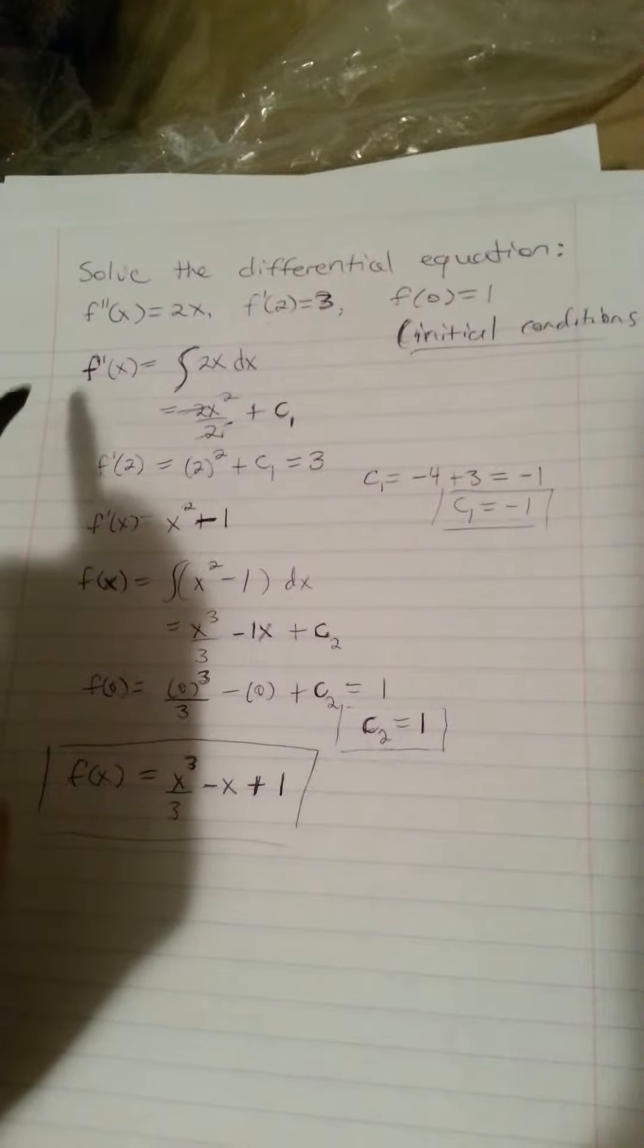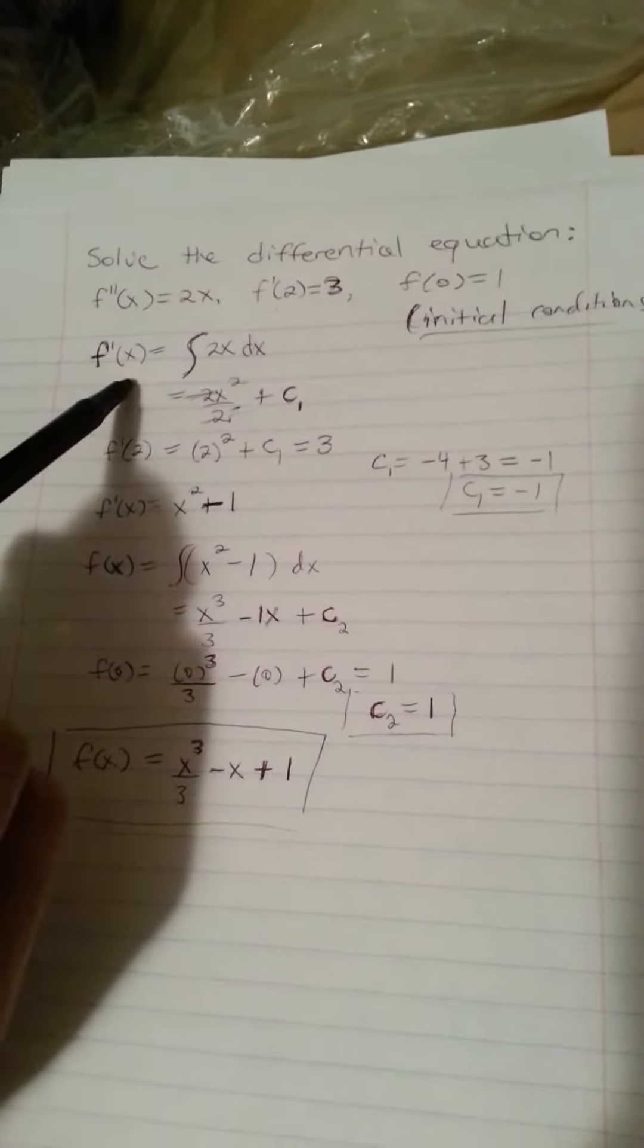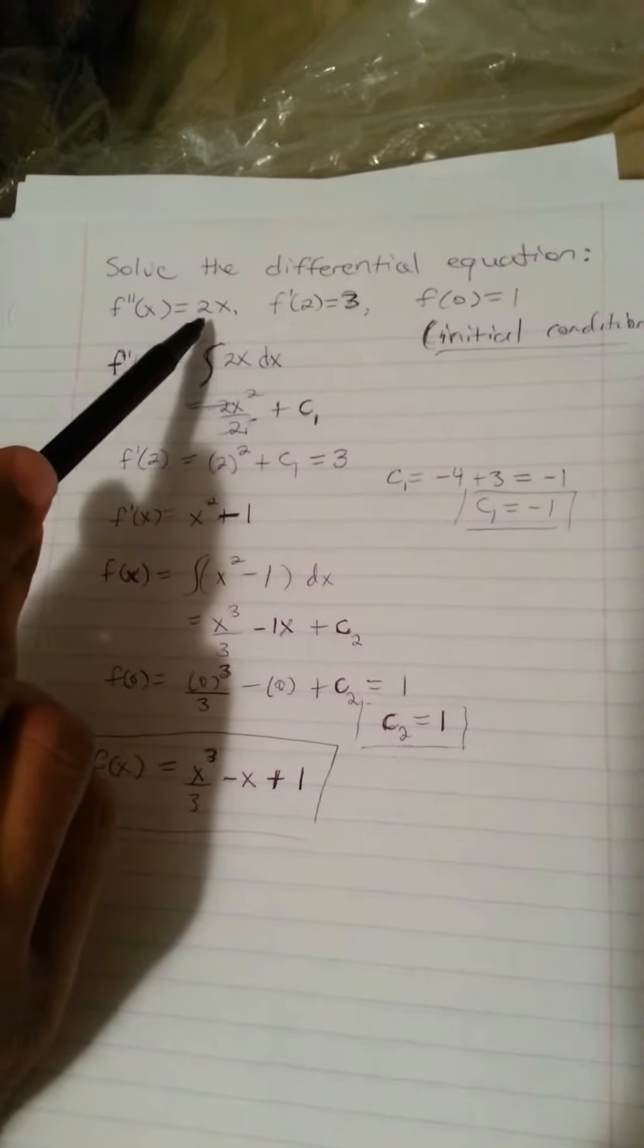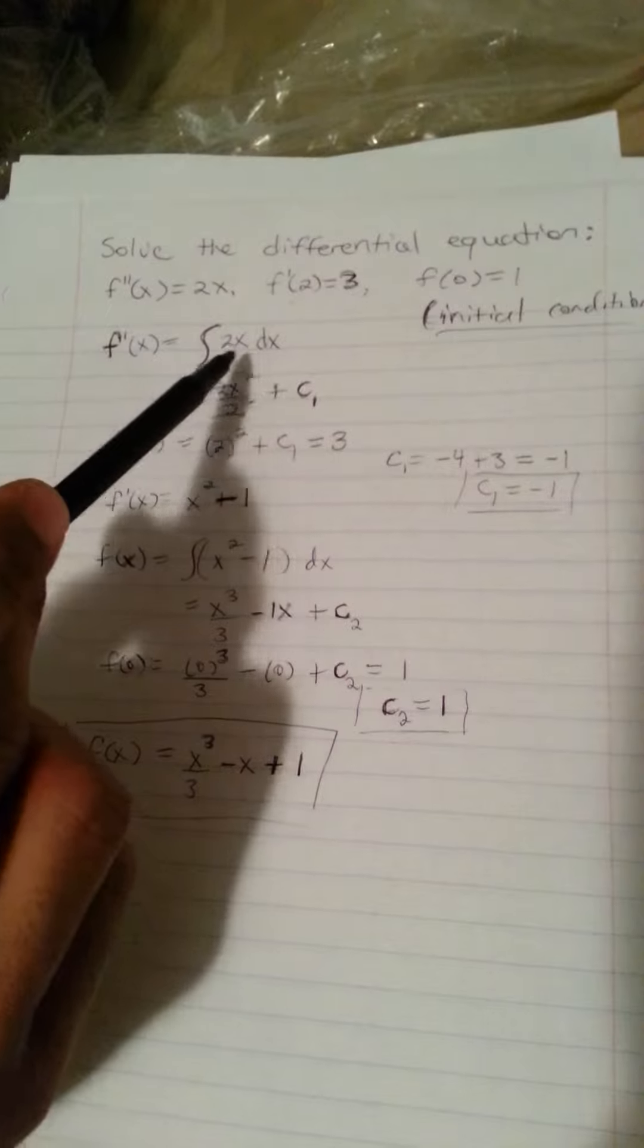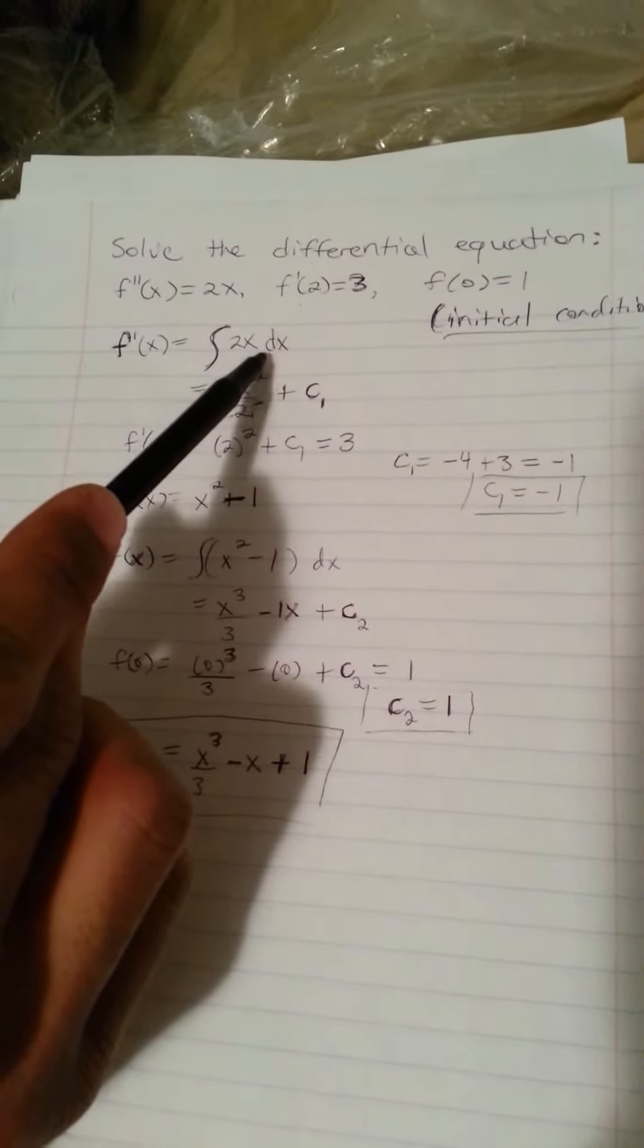So what I want to do first is do f prime of x and set it equal to the integral of this condition here, which is 2x. And then you always want to put your dx.